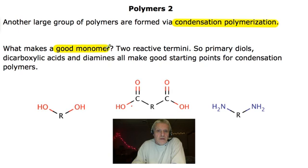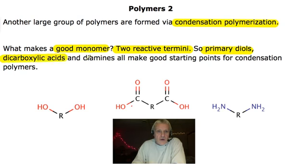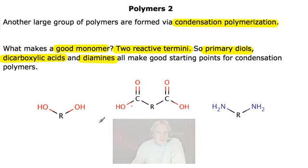A good monomer has two reactive termini — meaning the ends of the molecules are reactive and can participate in condensation reactions. Primary diols, with OH groups on either end of a molecule, dicarboxylic acids, or diamines are all good starting points for this type of polymerization.